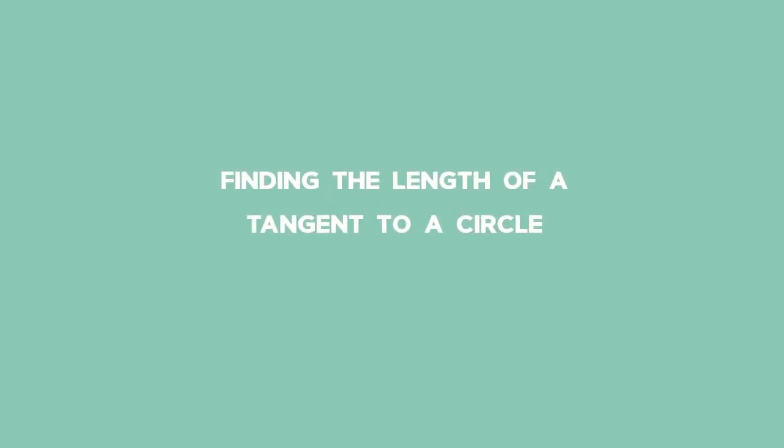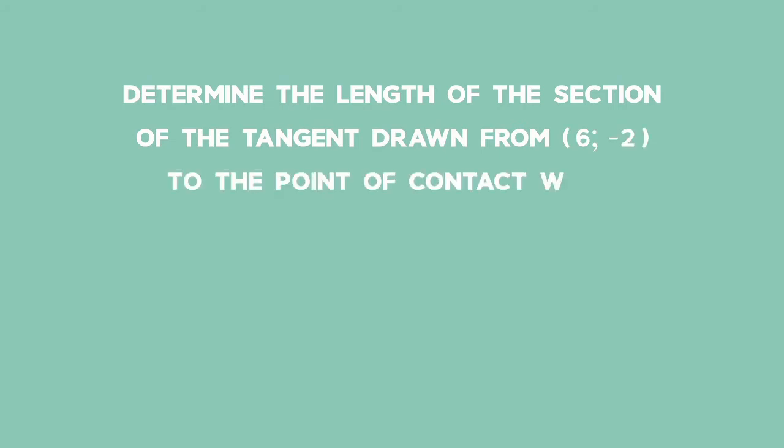Example 1: Finding the length of a tangent to a circle. Determine the length of the section of the tangent drawn from (6, -2) to the point of contact with the circle with the equation given here. The tangent is drawn from (6, -2) to the point of contact with a circle. The circle has the equation x² - 6x + y² + 2y + 8 = 0.